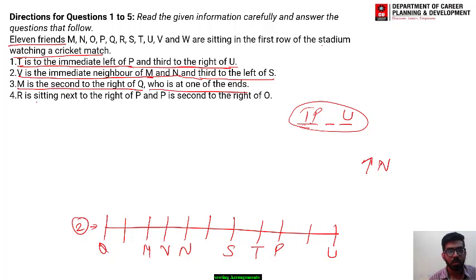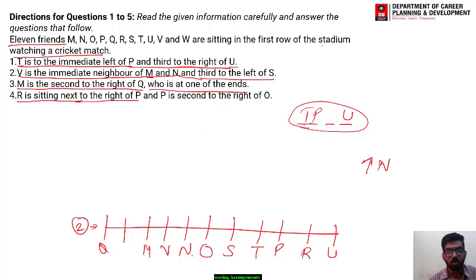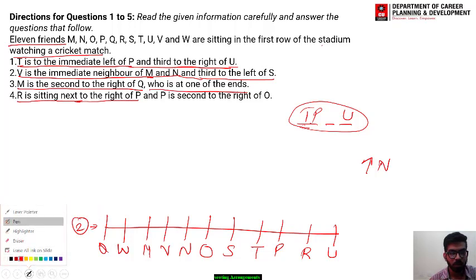Last statement: R is sitting next to the right of P, so R goes here. P is second to the right of O, so O is placed here. Checking who remains: Q, M, V, N, O, S, T, P, R, U are all filled. The remaining position is for W. This is our final diagram for this question.